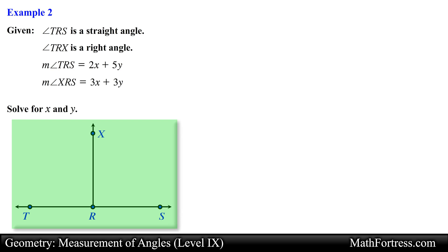Let's first label the diagram with the given information. We know that angle TRS is a straight angle, it measures 2x plus 5y. We also know that angle TRX is a right angle, so we go ahead and draw a square corner for this angle.